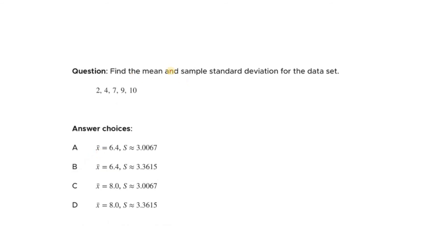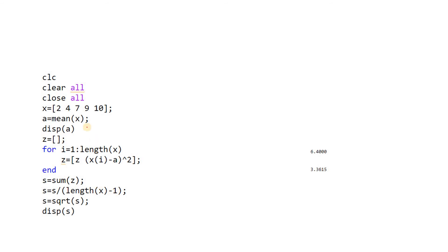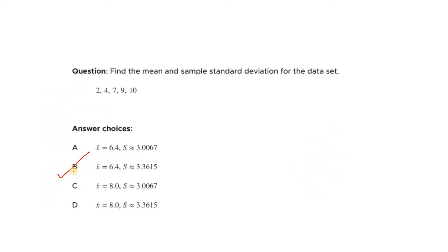Coming to the next question: find the mean and sample standard deviation for this data. The formula has already been discussed. Pause the video and try to attempt it, because practicing these kinds of questions will make you very comfortable in the written round of a data science interview. For sample standard deviation, we use length of x minus 1 in the denominator. We get mean = 6.4 and standard deviation = 3.3615, which is option B.